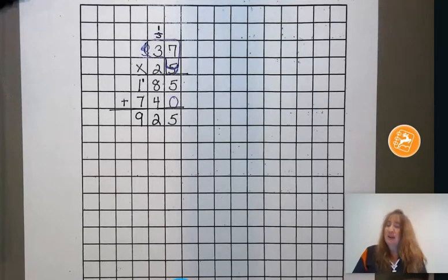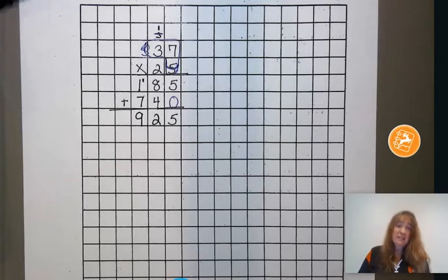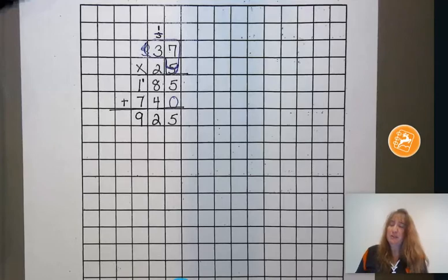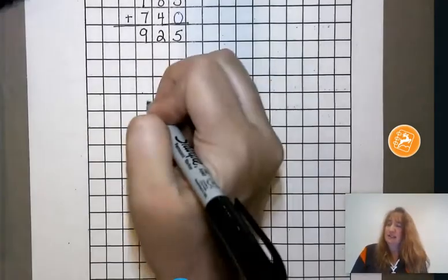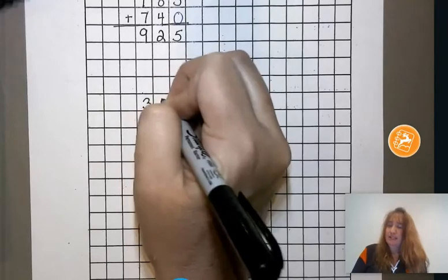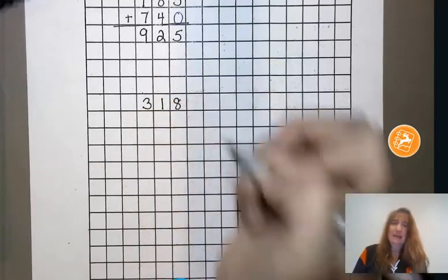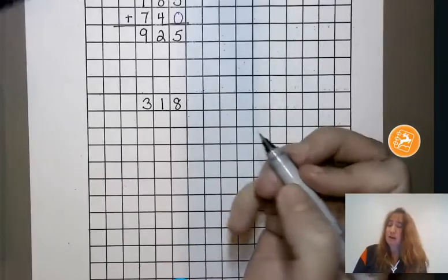Let's go ahead and look at another example. This time let's look with a 3-digit number being multiplied by a 2-digit number. So I'm going to move this up. Let's go with 318 and let's multiply that by 42.